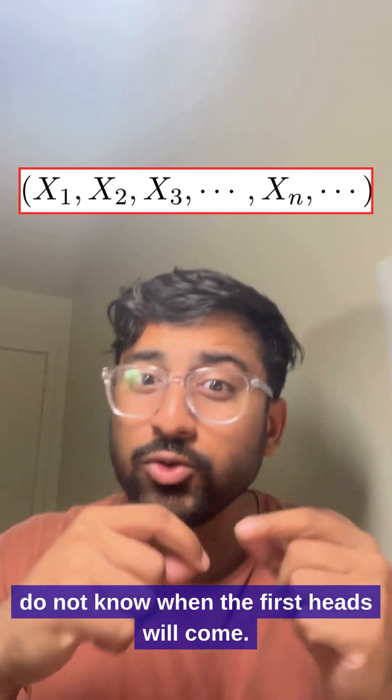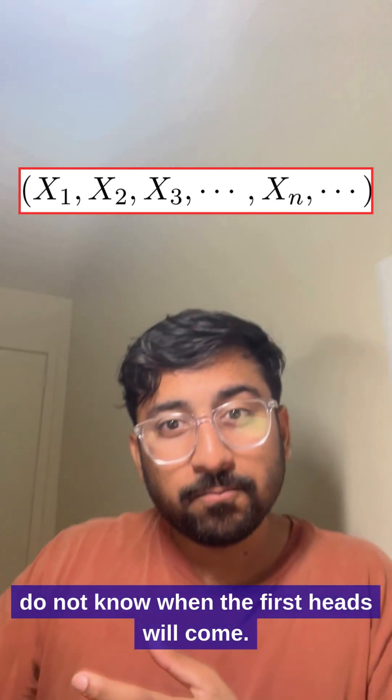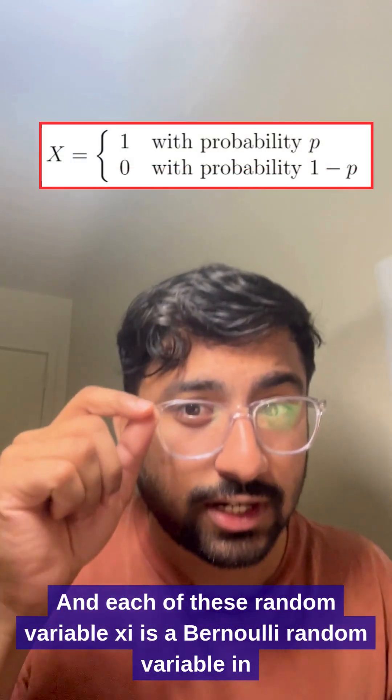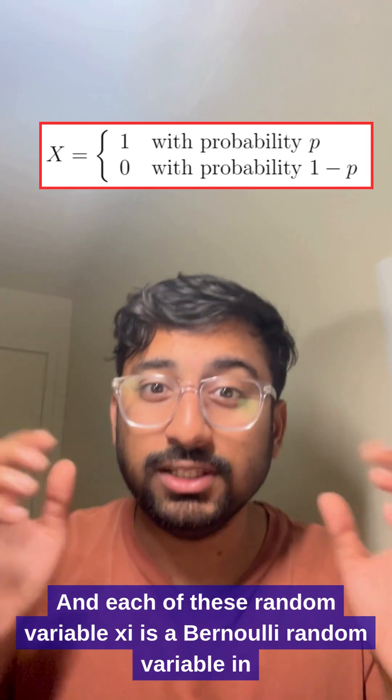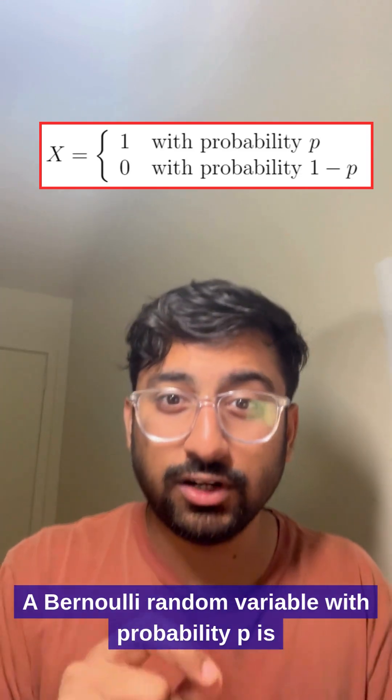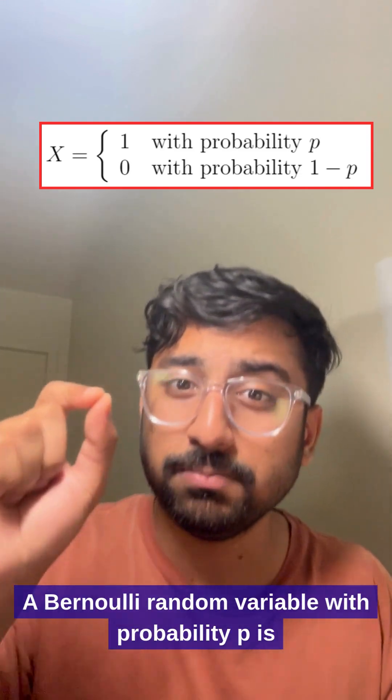Because you do not know when the first heads will come and each of this random variable Xi is a Bernoulli random variable in this very specific case, a binary random variable with probability p equal to half.